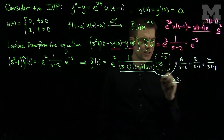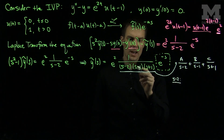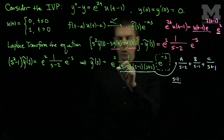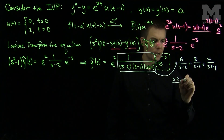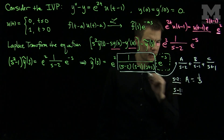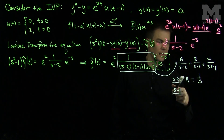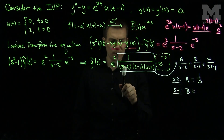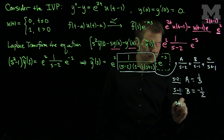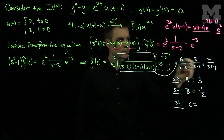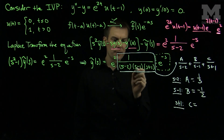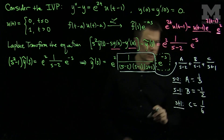Multiplying by s minus 2 and plugging in s equals 2, the B and C terms drop out, giving A equals 1 over 3. Multiplying by s minus 1 and plugging in s equals 1, B equals negative 1 half. Multiplying by s plus 1 and plugging in s equals negative 1 gives a negative 2 and negative 3 in the denominator, so C equals positive 1 sixth. So we have found A, B, and C.